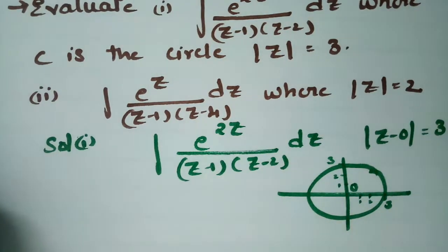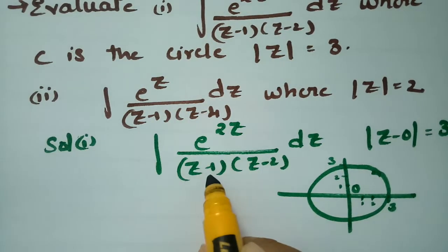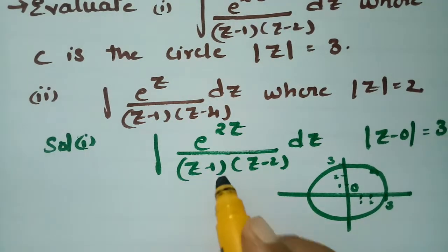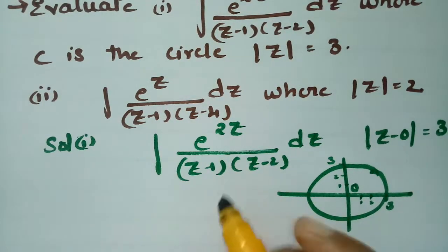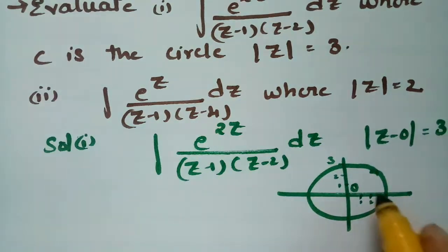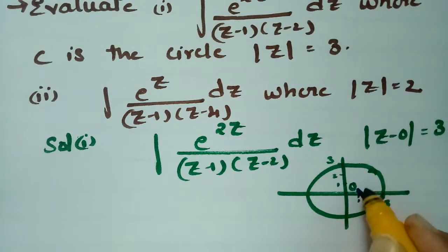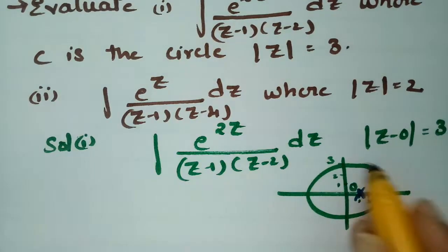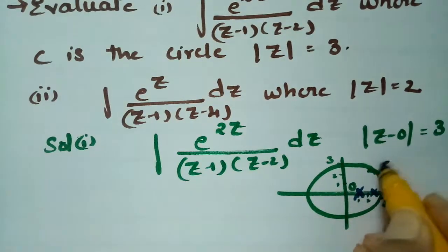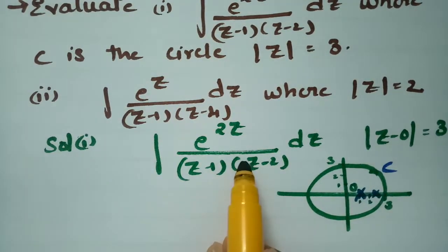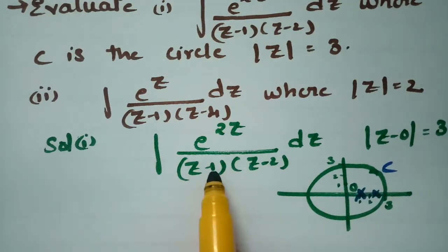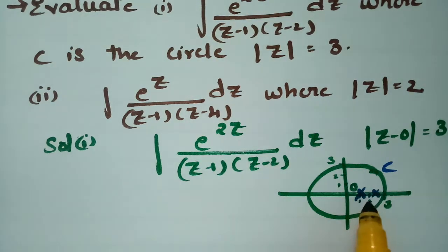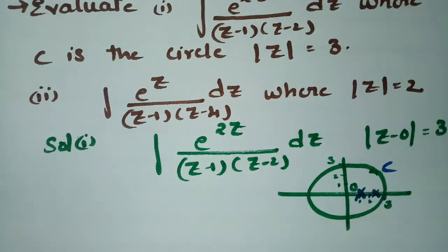We have to observe one thing: z = 1 and z = 2 are both within the circle of radius 3. Since both points 1 and 2 lie within or on the given circle, Cauchy's integral formula can be applied.